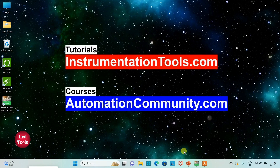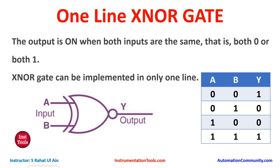Hello friends, welcome to Automation Community. Today in this video we are going to discuss about the one-line XNOR gate. The output is on when both inputs are the same — that is, both 0 or both 1. For XNOR gate, if both inputs are the same, either both false or both true, the output will be true. When the inputs are different — A is false and B is true, or A is true and B is false — the output Y will be false.